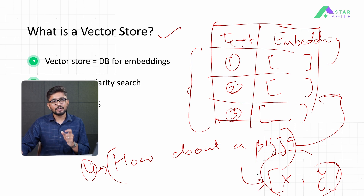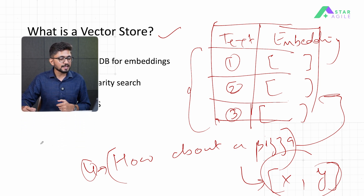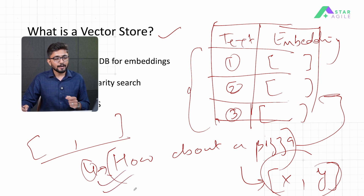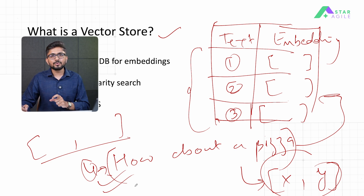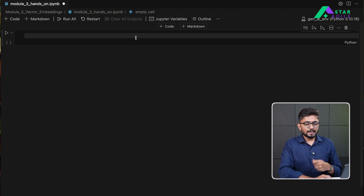Once the similarity search is done, the end result will be a list of vectors most similar to each other — in other words, the sentences or text from the original vector store that are similar to the original query provided. This concept is the building block of retrieval augmented generation. How it is used in RAG we will cover in the next module. So let's see this in action and understand how to convert text, chunk it, store it, and retrieve it.